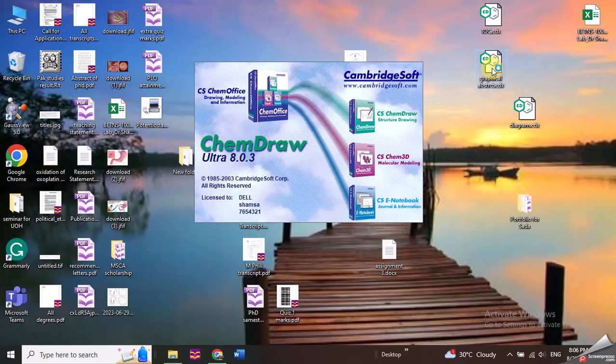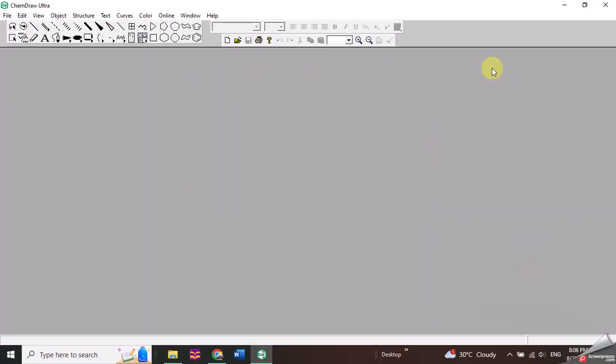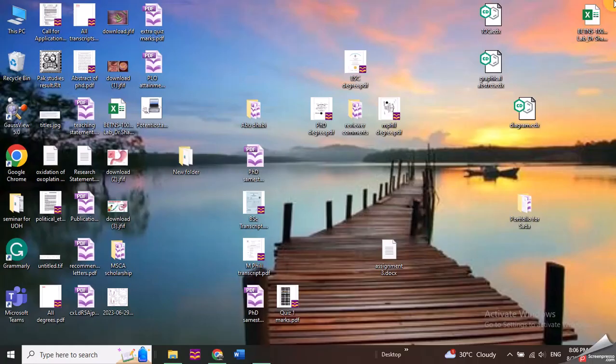Similarly, I have another example of graphical abstract. Here you can see this is a structure of titanium oxide that I have taken from another software and I have pasted it here. These chemical structures are drawn from ChemDraw and I have used different arrows to show a graphical abstract and to prepare it for the paper.